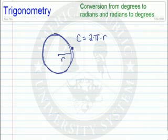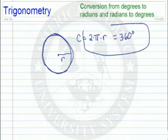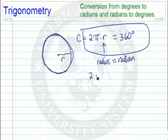And as we've seen already, if you go all the way around the circle, that's also equal to 360 degrees. So we're going to start with this idea that 2 times pi times r equals 360 degrees. And keep in mind that a radius is the same length as a radian. So what we can think here is that 2 times pi times radians equals 360 degrees.